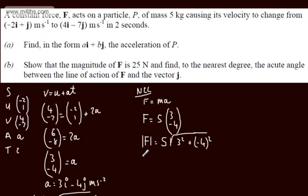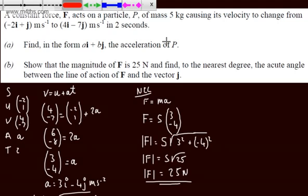So if we consider now, the magnitude of F is going to be 5 lots of the square root of 25. So we can say that this is going to be 5 times by 5, which gives us 25 newtons, as required. That is the magnitude. Force is also a vector quantity. As we can see, we've got both magnitude and direction. We now need to find the angle that this vector makes with the vector j.